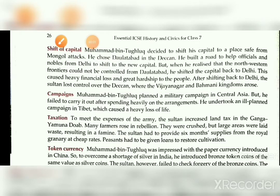The first major wrong decision of Muhammad bin Tughlaq was the shift of capital. Due to repeated Mongol attacks, he moved the capital from Delhi to Daulatabad. He sent officials and nobles first, but the long journey was very difficult for common people. He then shifted the capital back to Delhi, which caused a heavy financial crisis, and the Sultan also lost control over the Deccan.